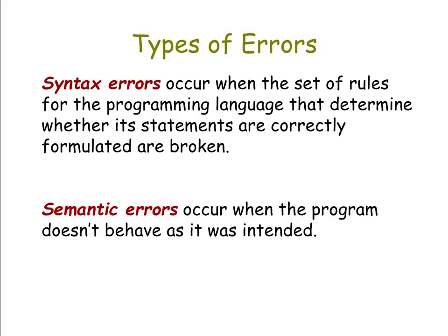There are also semantic errors, which occur when the program doesn't behave as it was intended. When you're writing your programs, you have an idea of how it's supposed to behave when somebody clicks on a button or touches a canvas. If it doesn't behave that way, then that's a semantic error.